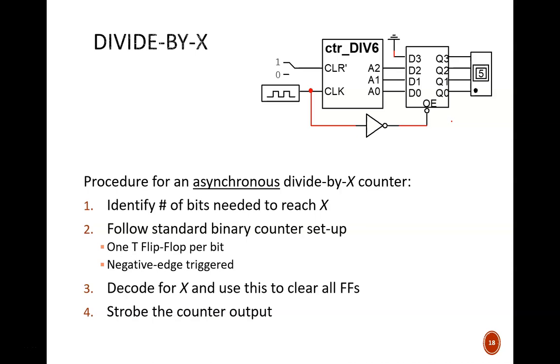This leads us to the general procedure for building a divide-by-x counter, where x is any whole number. First, identify the number of bits needed to reach x. Second, follow the standard binary counter setup with one flip-flop for each bit. Third, decode for x and use this to reset all the flip-flops through the asynchronous clear ports. For example, if x equals 6, decode for binary 1, 1, 0. If x equals 9, decode for binary 1, 0, 0, 1. Finally, strobe the counter output to mitigate the effect of glitches.